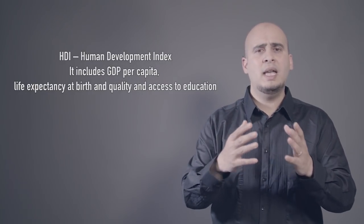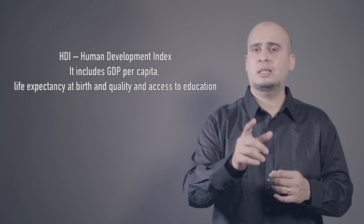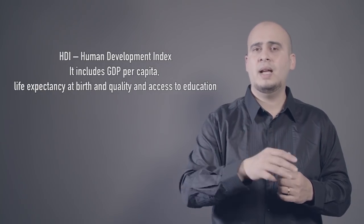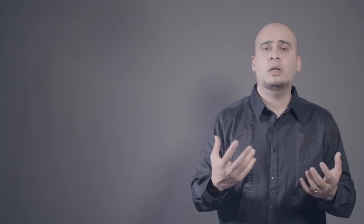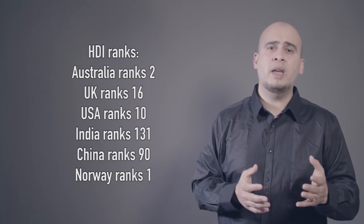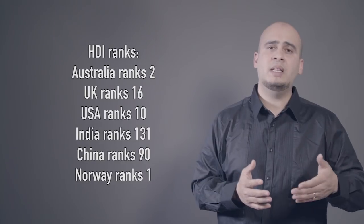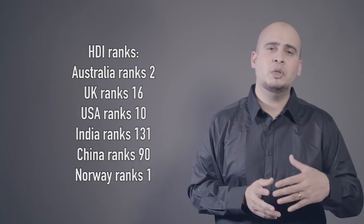The two additional factors in HDI are the quality and access to education, and the life expectancy at birth. This way HDI gives a better understanding of how the country is doing in terms of standard of living. Countries like Norway and Australia always rank in the top three for HDI, but not so when it comes to GDP.